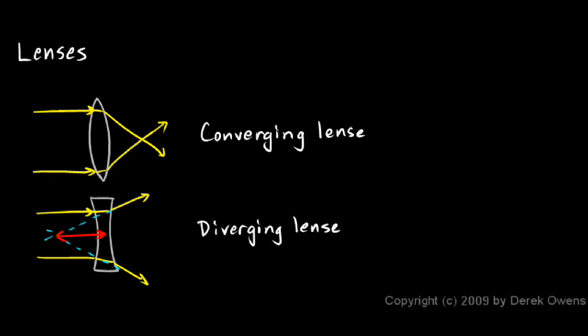So a diverging lens has a focal length just as a converging lens does as well. And exactly how long the focal length is is an indicator of how strong that lens is.